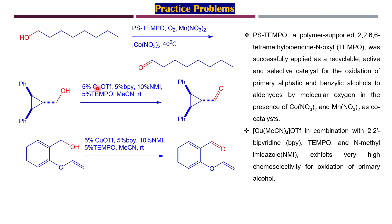A similar reaction can be carried out using copper triflate in presence of bipyridine, with TEMPO in acetonitrile as solvent. This converts benzyl alcohol to benzaldehyde. Similar reagents can also achieve the oxidation of benzylic alcohols to benzaldehyde. This concludes our discussion of TEMPO oxidation reactions. Keep visiting for more lectures on topics related to CSIR-NET and GATE exams.